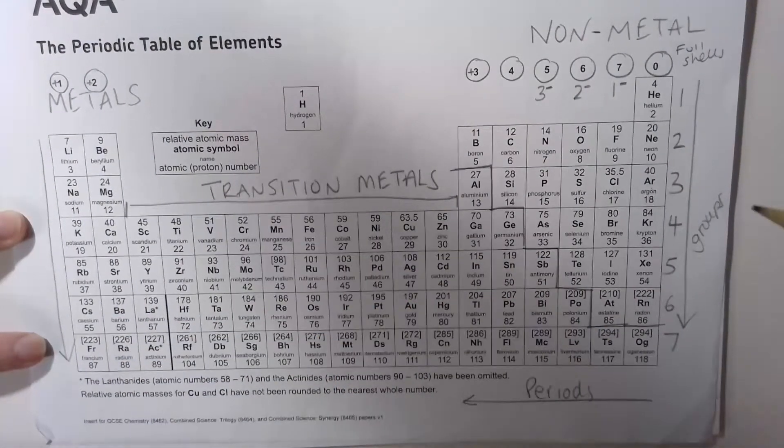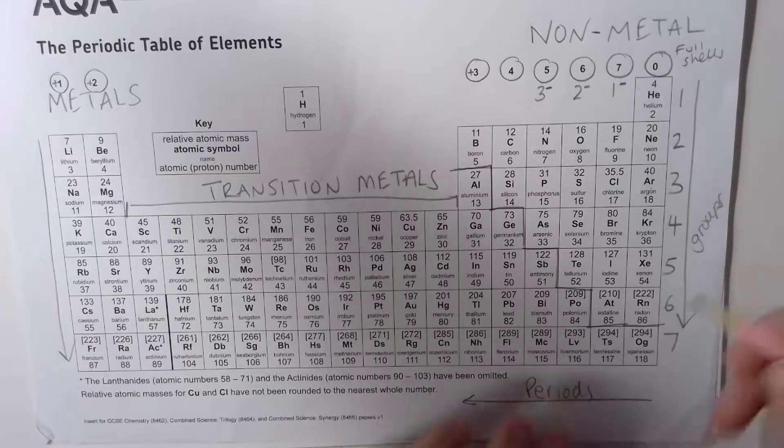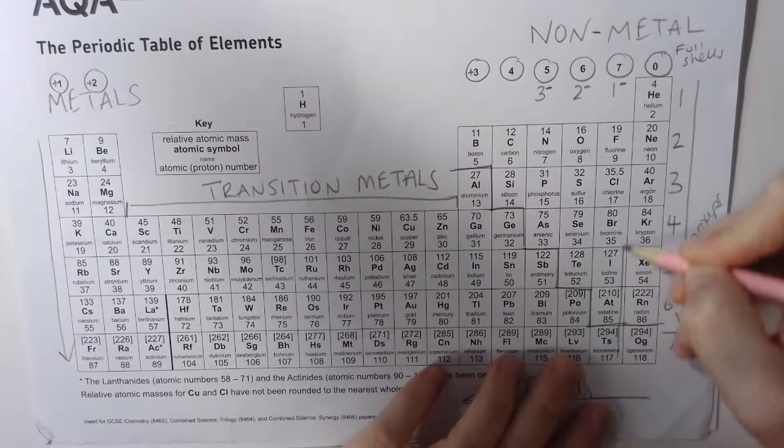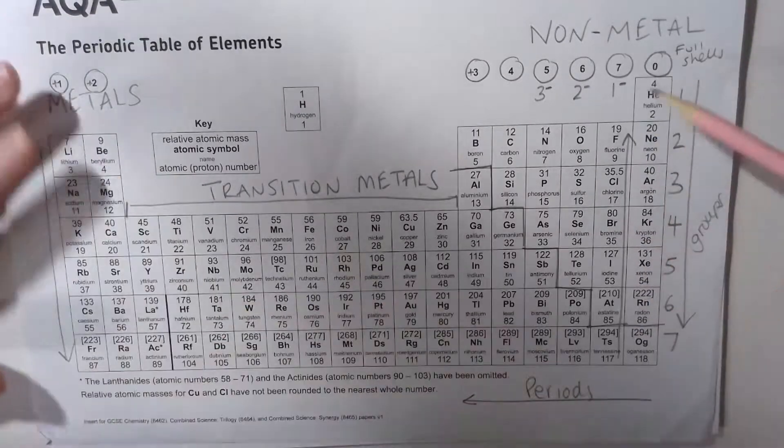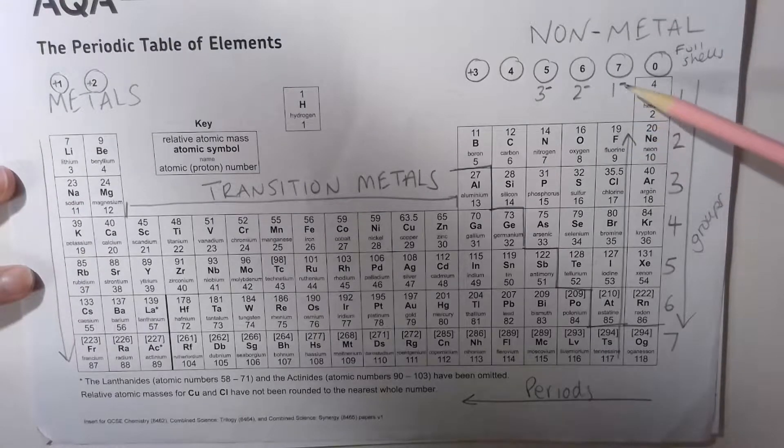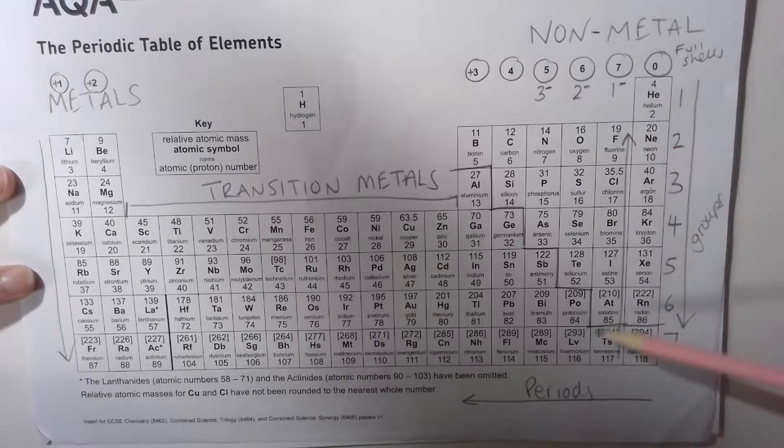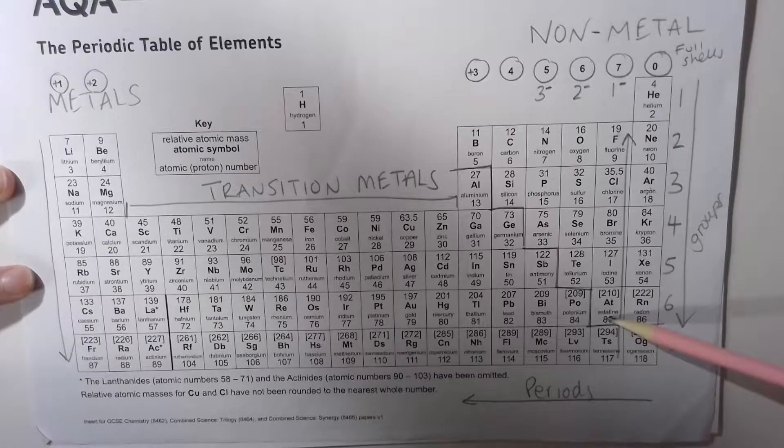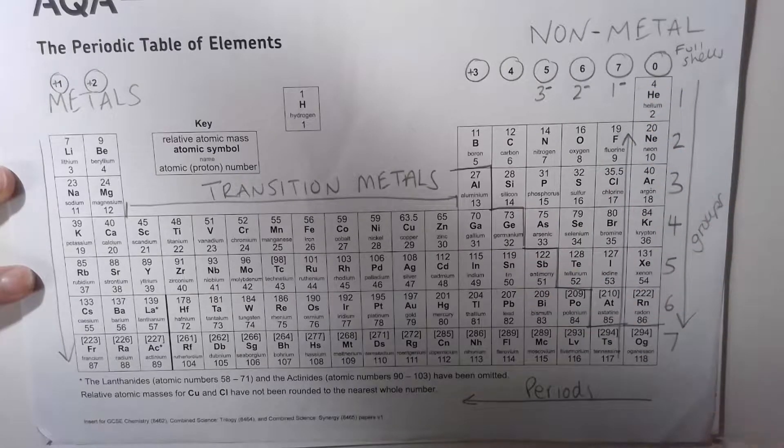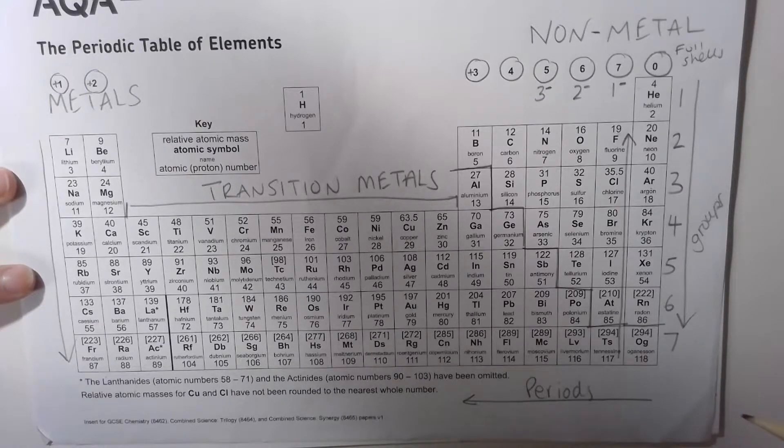Group seven gets more reactive as you go up the group because they want to gain one electron to fill their outer shell. It's much easier for fluorine to drag in one electron than it is for something like astatine. This is the kind of thing you should be annotating on your periodic table in the first few minutes of your exam.